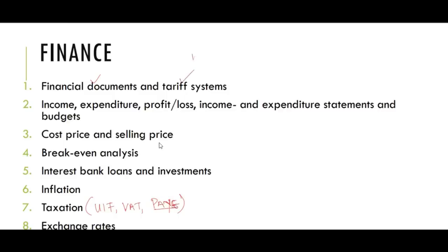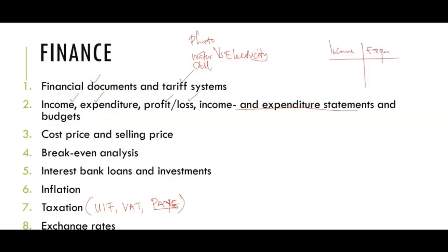Then tariff system — we have water, we have the electricity one, we have the coal options. It might also be photocopying papers, and you look at how to compare option one to option two or option three — which option will be cheaper. Then we shall look at income and expenditure, whereby we have profit and loss, surplus and deficit. Income and expenditure statements — one side you have income and the other side you have expenses. It's more like a budget.